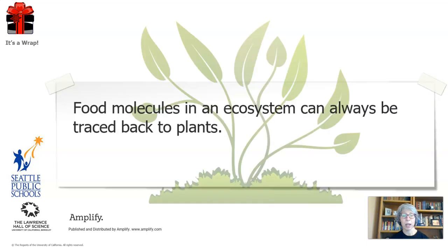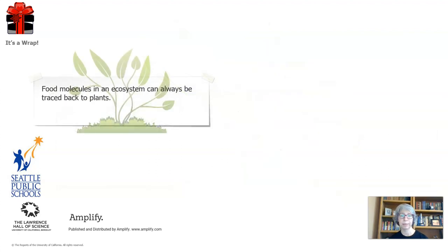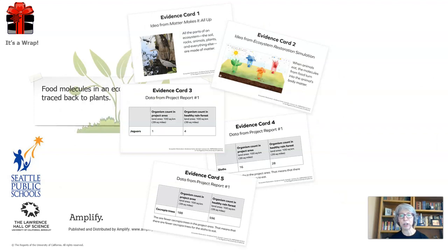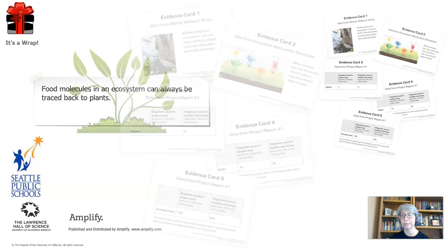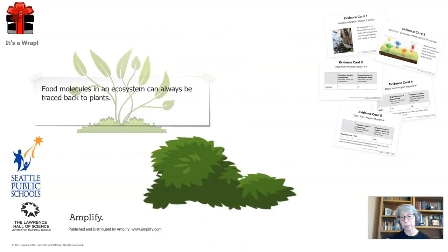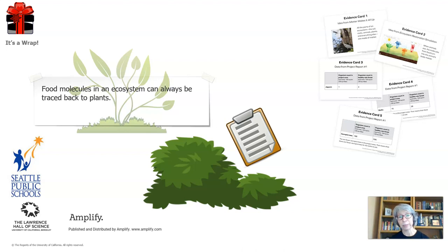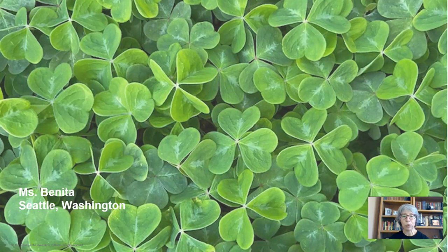It's a wrap. Let's review what we accomplished today. We learned that food molecules in the ecosystem can always be traced back to plants. We used evidence cards to firm up our scientific argument. And we made an action plan to plant more plants in the project area and to collect more data to see what happens. Thank you so much for joining me, and I look forward to hearing about how you continue in this unit. Chapter 2 and Chapter 3 have been done by my friend Heather, who is a teacher in the Denver Public School District. Bye!